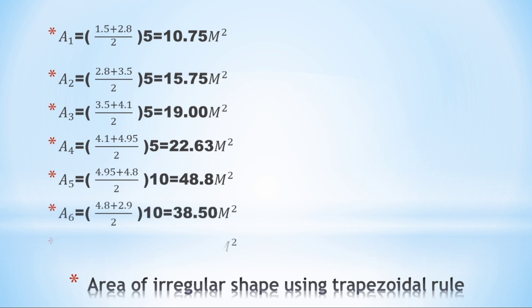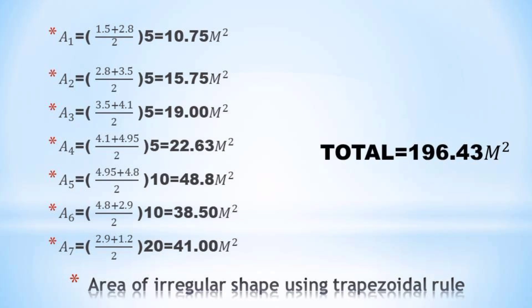This is done to all the others, noting where the distance changes to use a different interval apart from the 5 meter interval. We'll calculate the area of the irregular shape for areas 1, 2, 3, 4, 5, 6, and 7 as illustrated there, and we'll have our total.